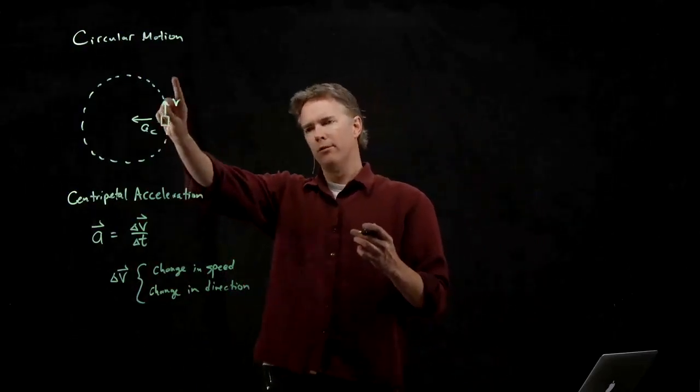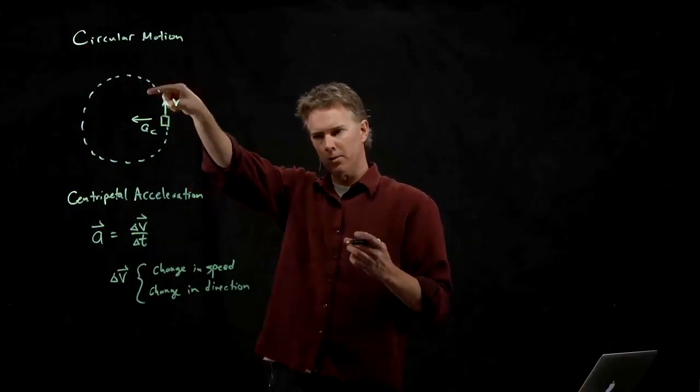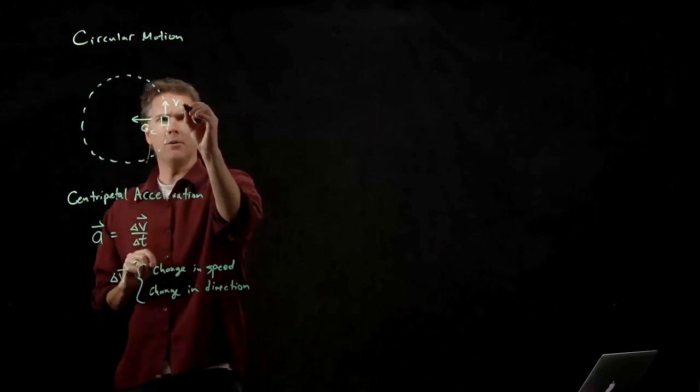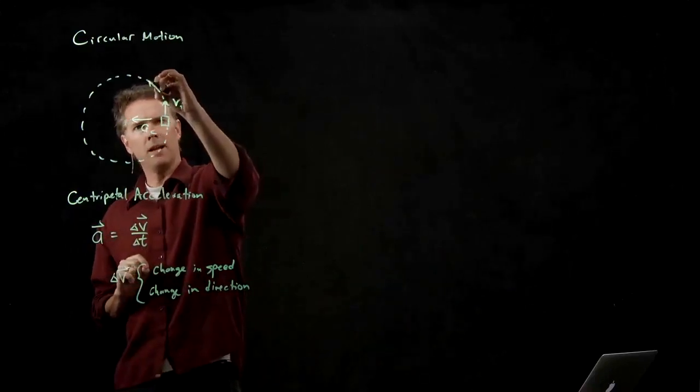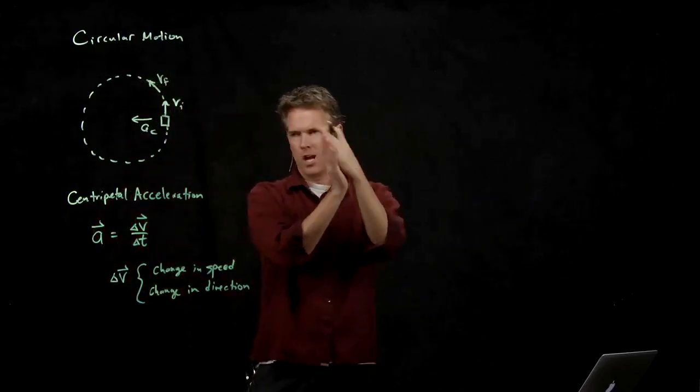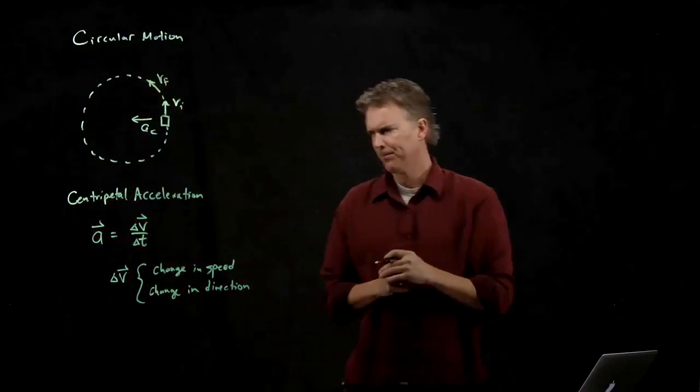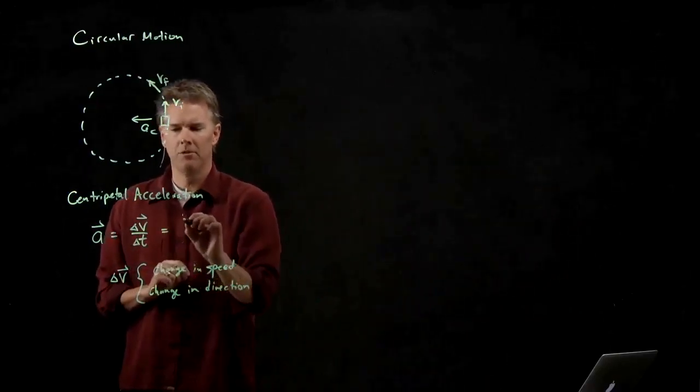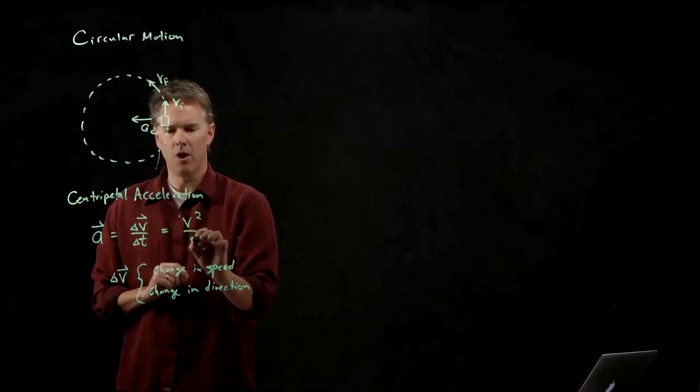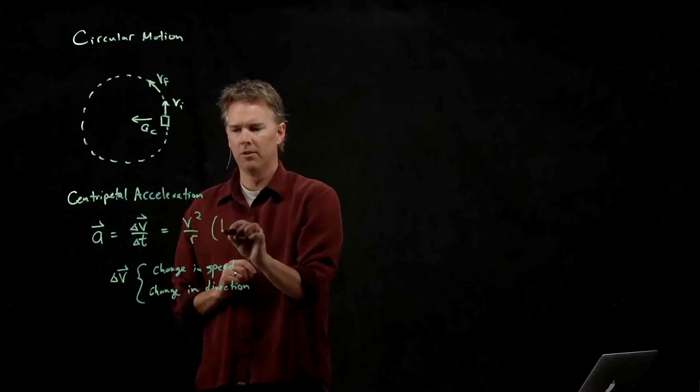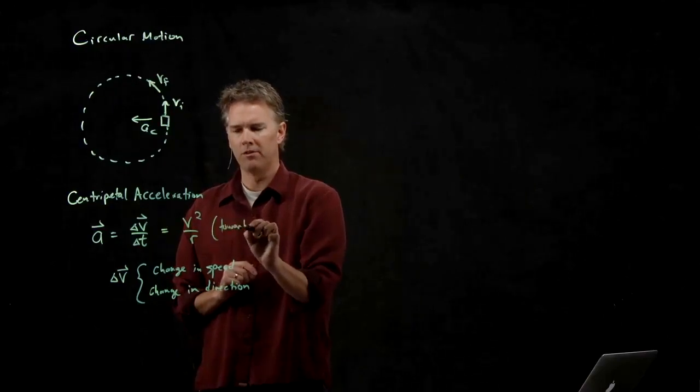In this case, even if we're not changing speed, we are changing direction as we go. Because if vi is right there, at some later time, vf would look like that, it certainly has changed direction. Alright, so centripetal acceleration becomes v squared over r in magnitude, and it points towards the circle's center.